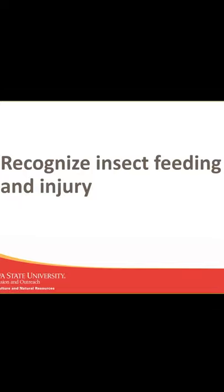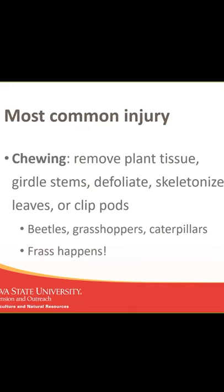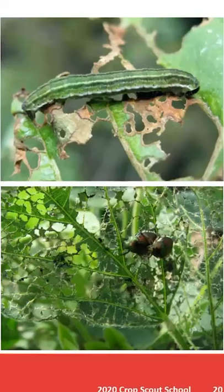We're going to transition to the second part here: recognizing injury. Sometimes you don't see the pest when you're scouting. The most common type of injury you see is from insects with chewing mouthparts, and it's going to be obvious even at low densities because pieces are going to be missing. They remove plant tissue, girdle stems, clip pods, clip silks, and can even prune back roots.